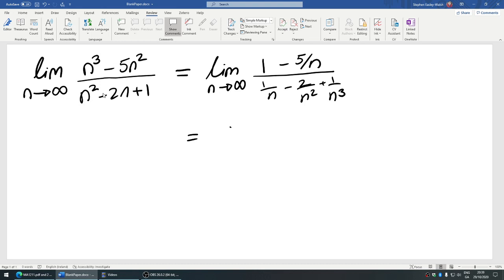And then when n goes to infinity, we'd be left with 1 minus 0 over 0 minus 0 plus 0, which is 1 over 0. So this here diverges.